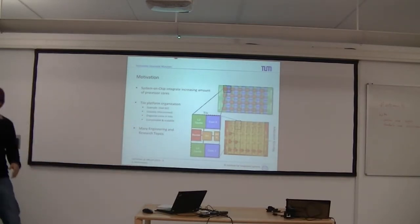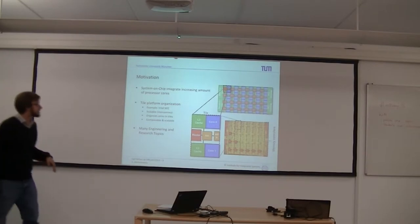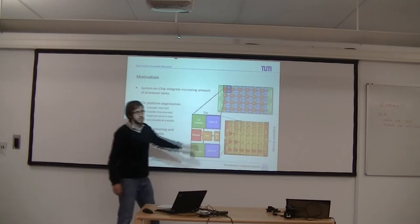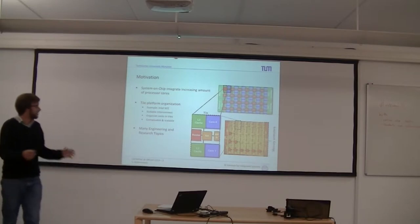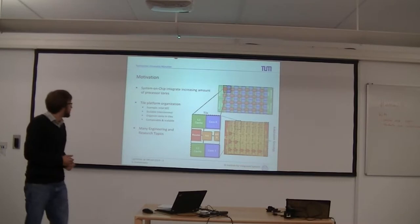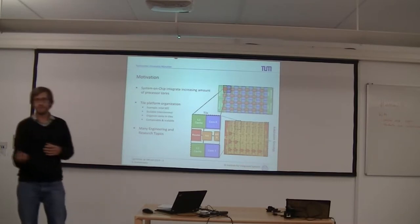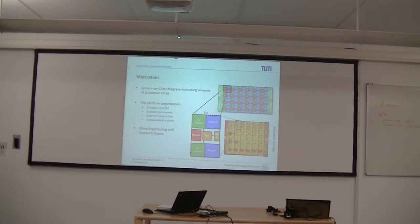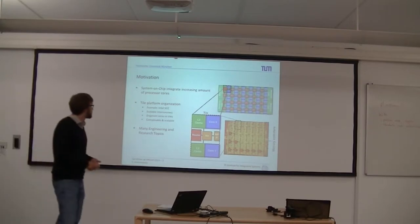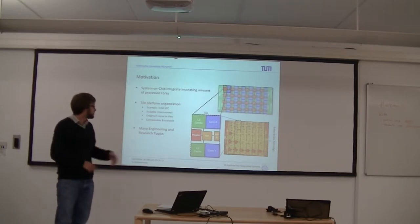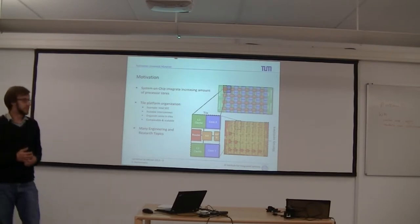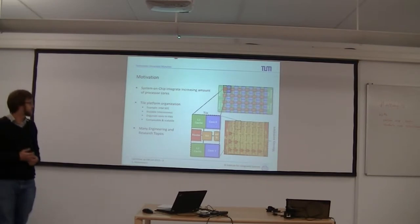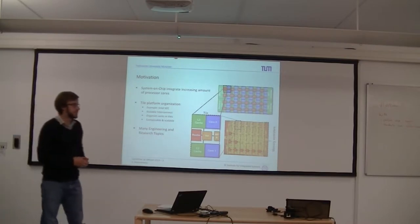Just a short motivation. In the single-chip cloud computer of Intel — the 48-core machine — we will have an increasing amount of processor cores on chips. To make it composable and overcome bottlenecks in communication, we employ network-on-chip. There's also a tiered organization, and the company Tilera, for example, built a commercial many-core system-on-chip containing up to 96 cores. There are a lot of engineering research topics around there.